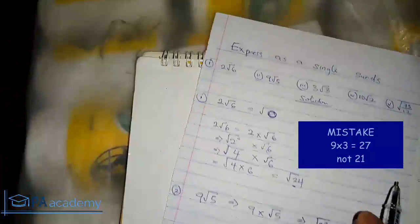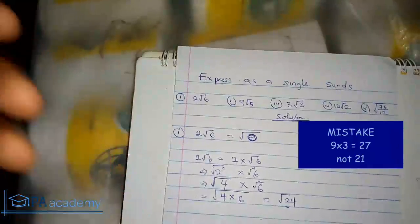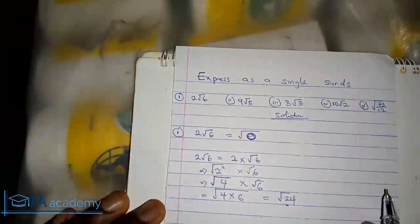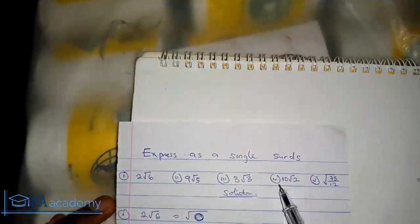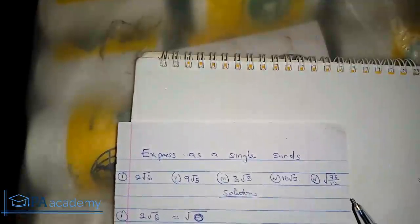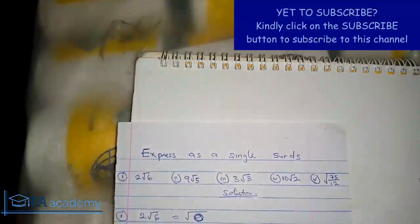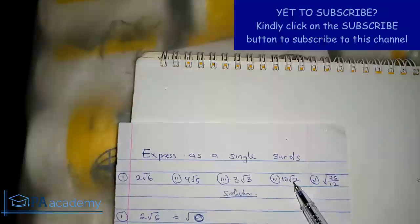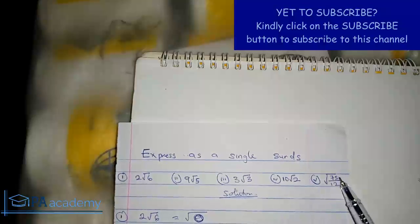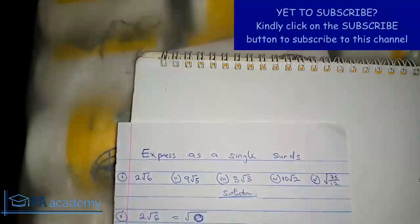You can see that expressing a surd as a single surd is very simple. Now I want you to do Example 4 and Example 5 — find the value of 10√2 and √75 over 12 expressed as a single surd — and let me know your answers in the comments section below. I'll see you in Part 3 of this video. Thank you.